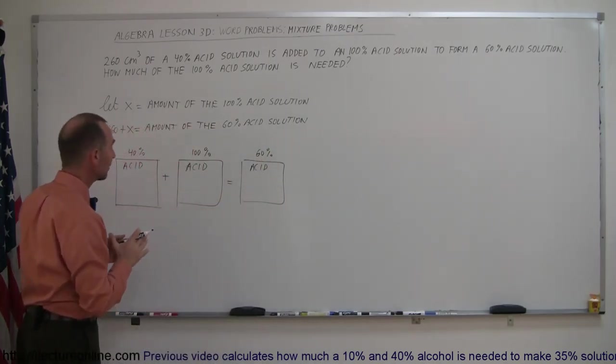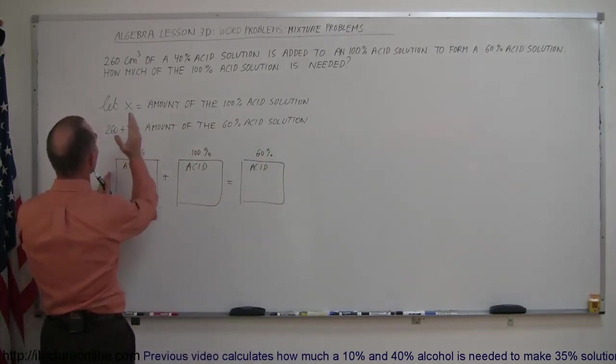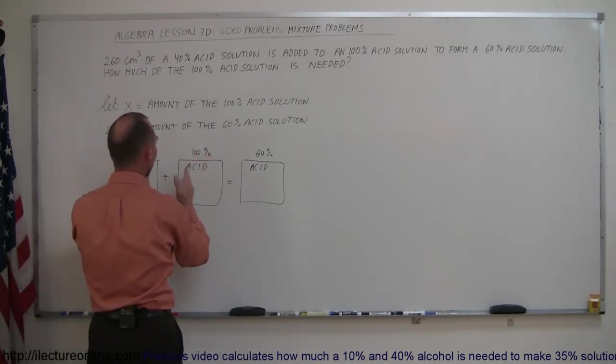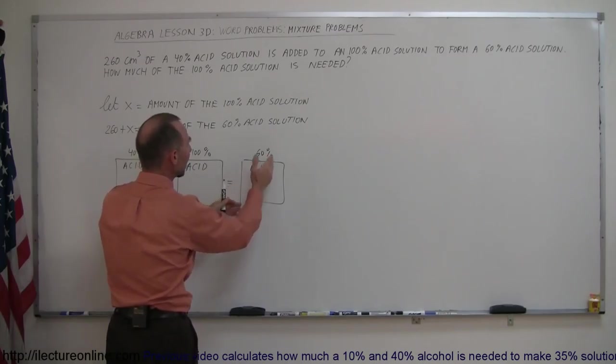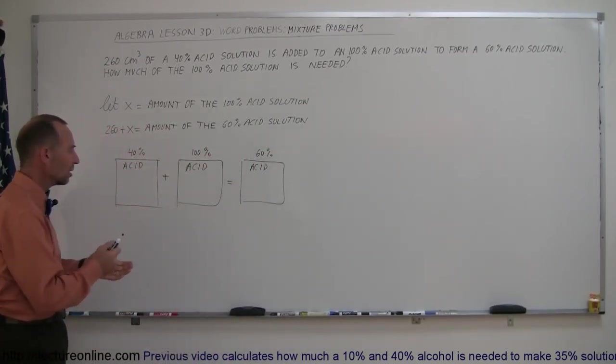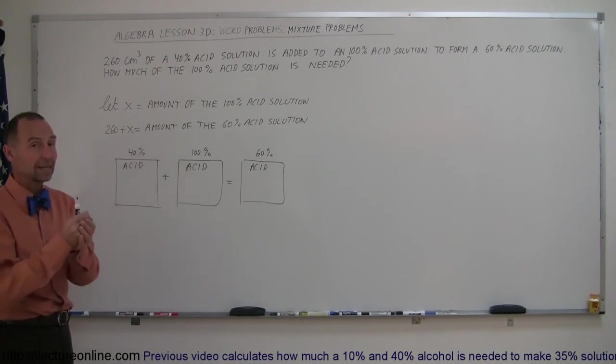Keep track of the acid - however much acid you had in the 40% solution plus how much acid you have in the 100% solution together should add up to the amount of acid you have in the 60% solution. How do you calculate the acid in each solution? You multiply the concentration times the amount that you have.